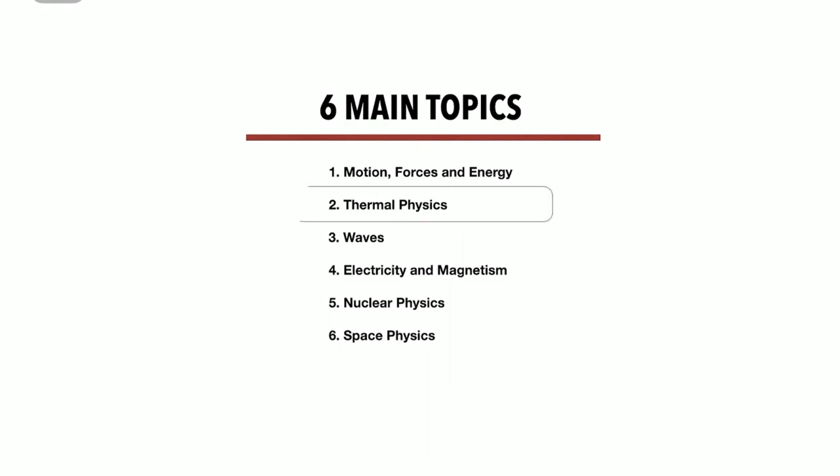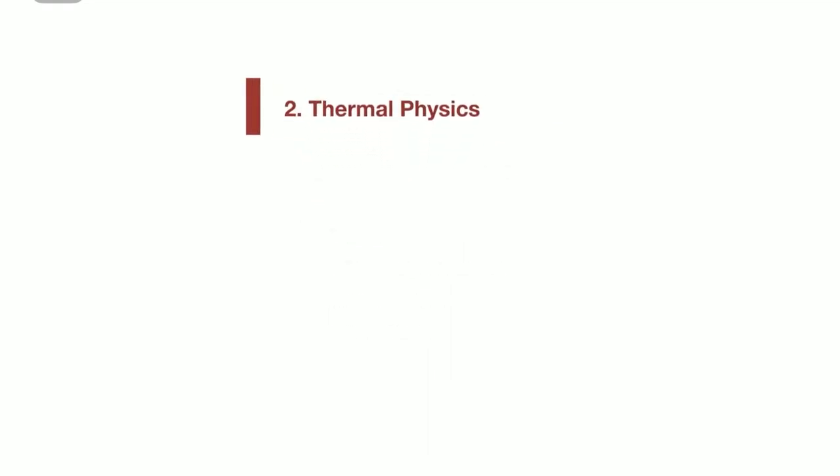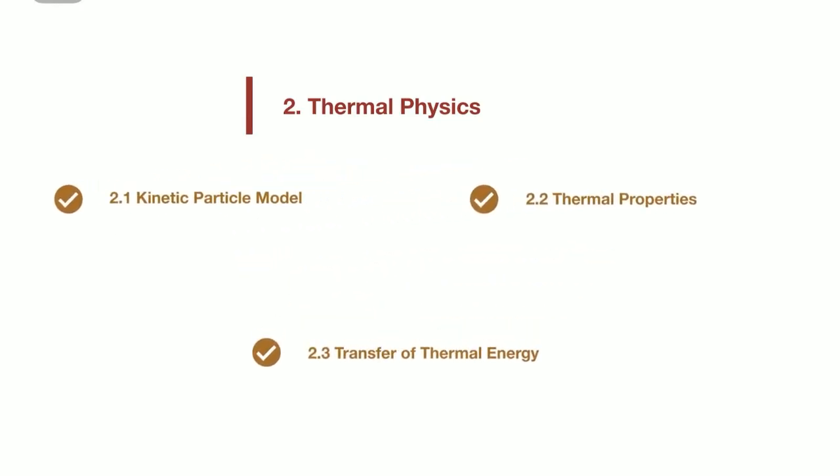Now we will be diving into chapter 2, thermal physics. First off, make sure you know how to convert temperature from Celsius to Kelvin. For this, we use the formula temperature in Kelvin equals to temperature in Celsius plus 273.